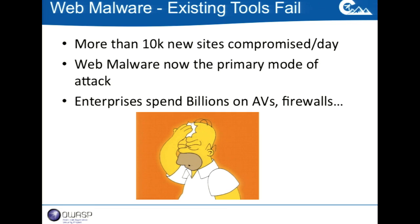From our perspective, the fight against web malware is not succeeding. If you just look at the raw numbers, more than 10,000 new websites are getting hit with web malware every single day — and this is just on the Google Safe Browsing list, not even counting other blacklists. If you just plot the graph of how many websites are getting infected every single day, it's literally scary. Enterprises and hosting companies are spending billions on antiviruses and WAFs, but it's not working.